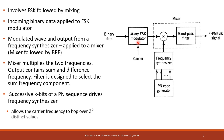FSK means frequency shift keying. In binary FSK, a '0' is transmitted at one frequency and '1' at a different frequency. In M-ary FSK, consider M equal to 4: two bits are grouped per symbol, and each combination maps to a particular frequency — 00 is F0, 01 is F1, 10 is F2, and 11 is F3.